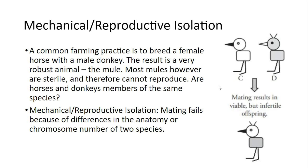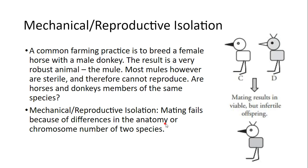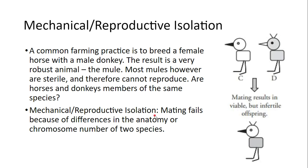Mechanical and reproductive isolation can also occur because of differences in anatomy or differences in chromosome number. The horse and donkey example is a case of chromosome number difference — the mule ends up with an odd number of chromosomes. When we create gametes, we cannot evenly divide an odd number, so mules are sterile. Other examples of mechanical isolation would be differences in anatomy — a duck could not mate with a mourning dove because their anatomy is too different, so they are mechanically isolated.